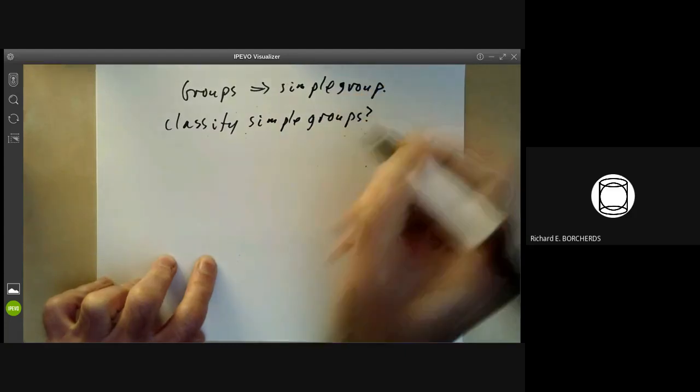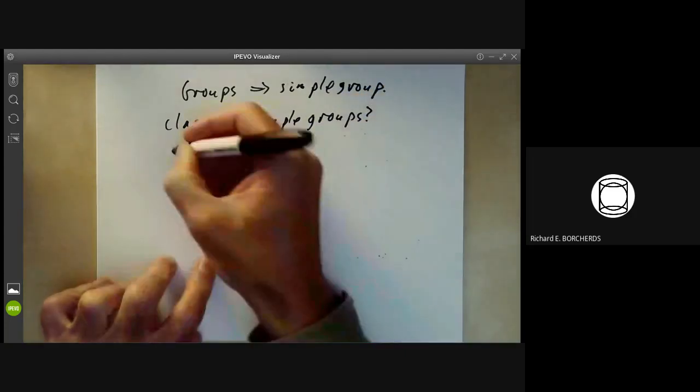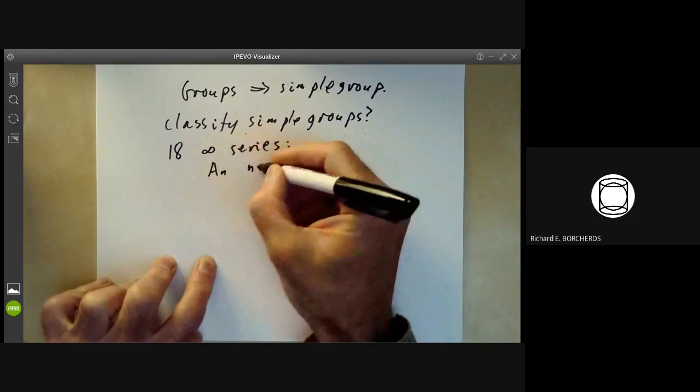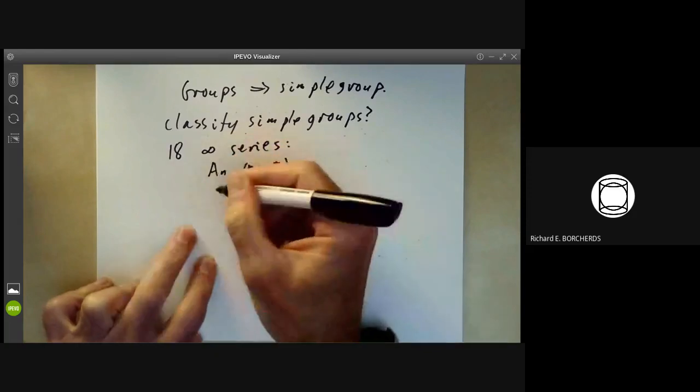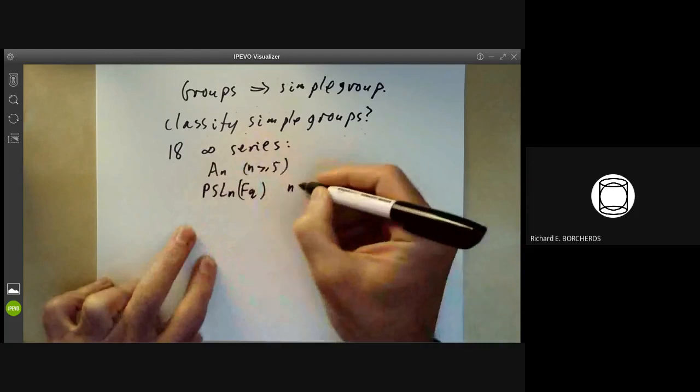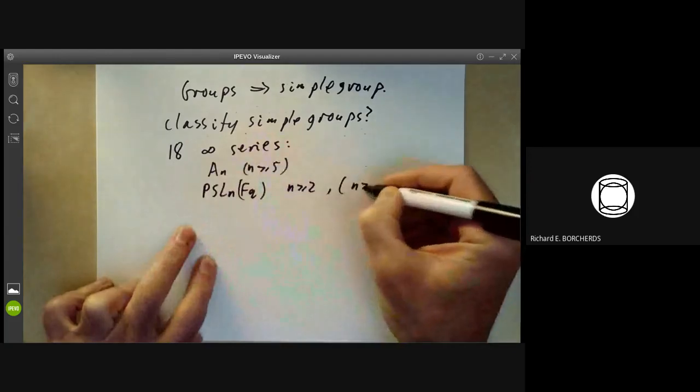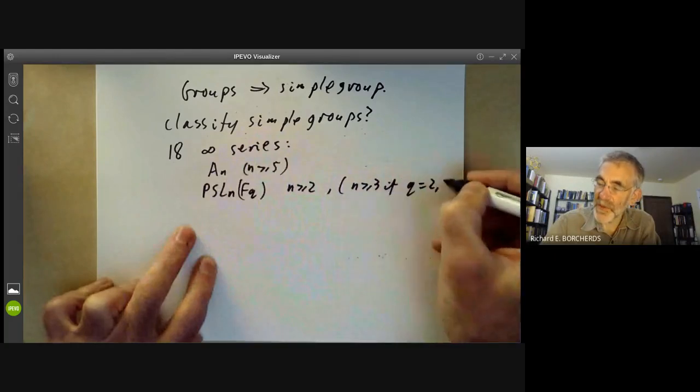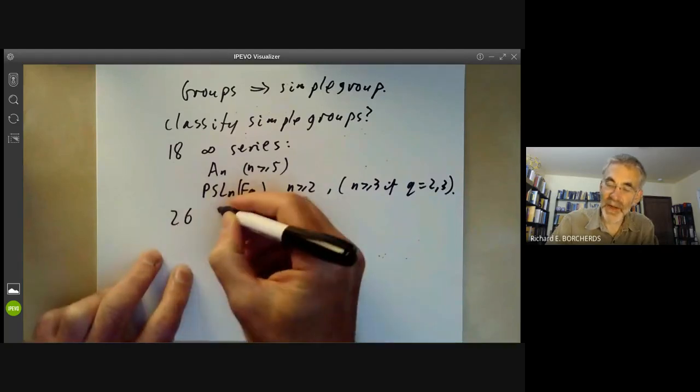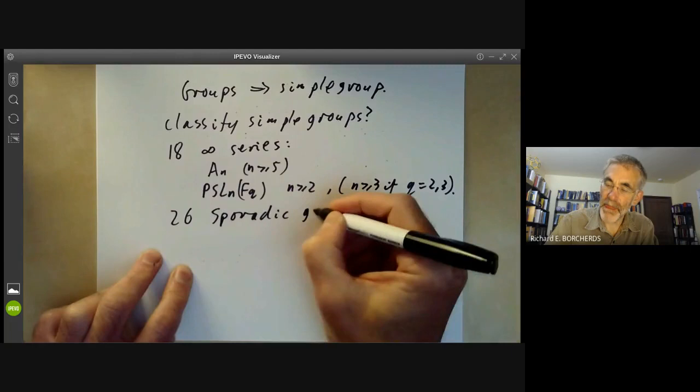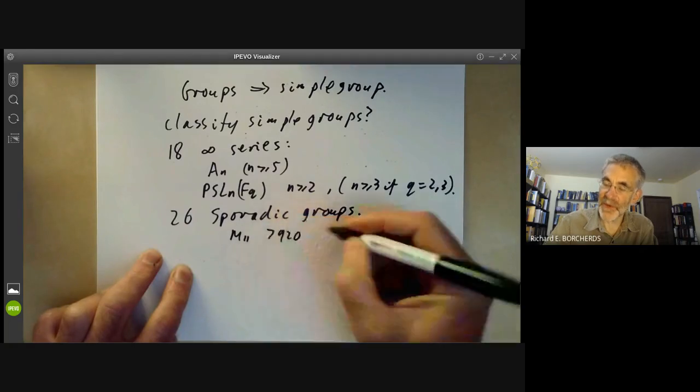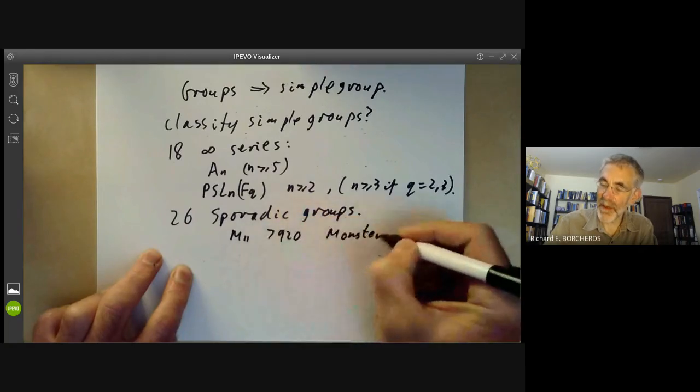Well, the simple finite groups have been classified. There are 18 infinite series. And two typical examples of this are the groups, alternating groups An for n greater than or equal to 5. And the projective special linear groups is n over Fq. This is provided n is greater than or equal to 2 and n is greater than or equal to 3 if q is 2 or 3. And various other series. And then there are 26 sporadic groups which don't fit into this classification. So the smallest is M11 which has about 7920 elements and the biggest is the monster which has about 10 to the 54 elements.